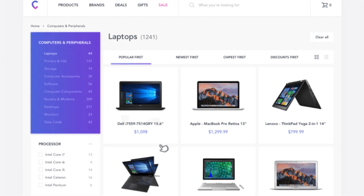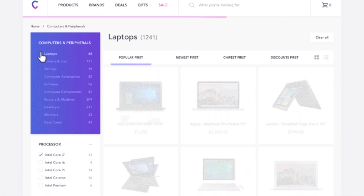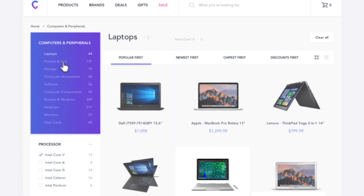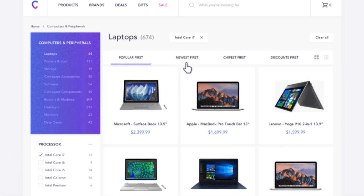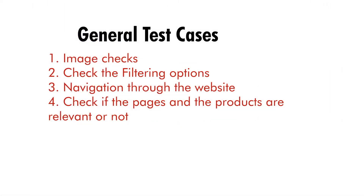Content filtering options should be tested to verify if they are working, and to ensure they help the user identify a specific set of products whenever they check a particular option. Navigation through the website should be comfortable and frictionless. You should also check if the pages and products are relevant to each other or not.